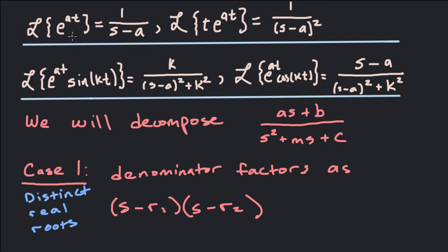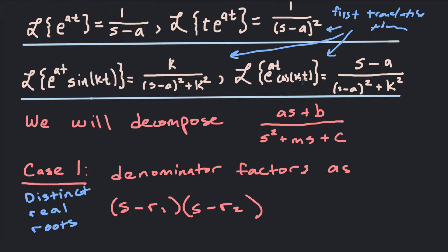The first one: the Laplace transform of e^(at) is 1 over (s minus a). The second: the Laplace transform of t·e^(at) is 1 over (s minus a) squared — that's given by the first translation theorem. Then we have the Laplace transform of e^(at)·sin(kt), which is k over (s minus a)² plus k², and the Laplace transform of e^(at)·cos(kt), which is (s minus a) over (s minus a)² plus k². All three of these are the first translation theorem, and they are the most common Laplace and inverse Laplace transforms we'll see when solving differential equations.